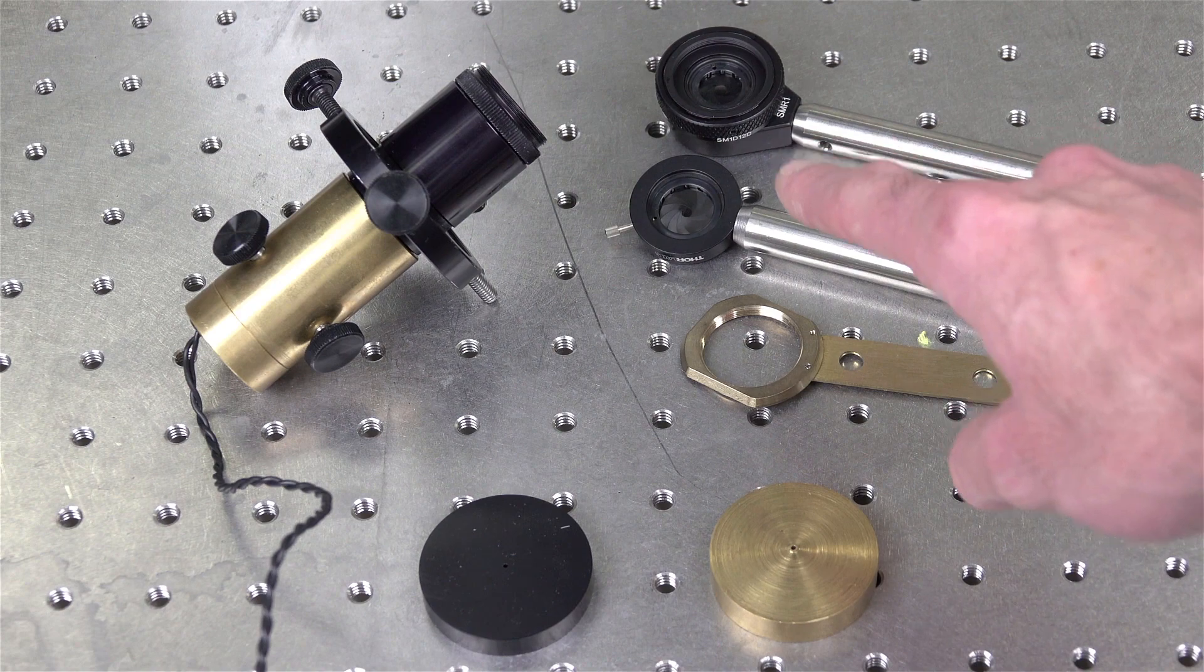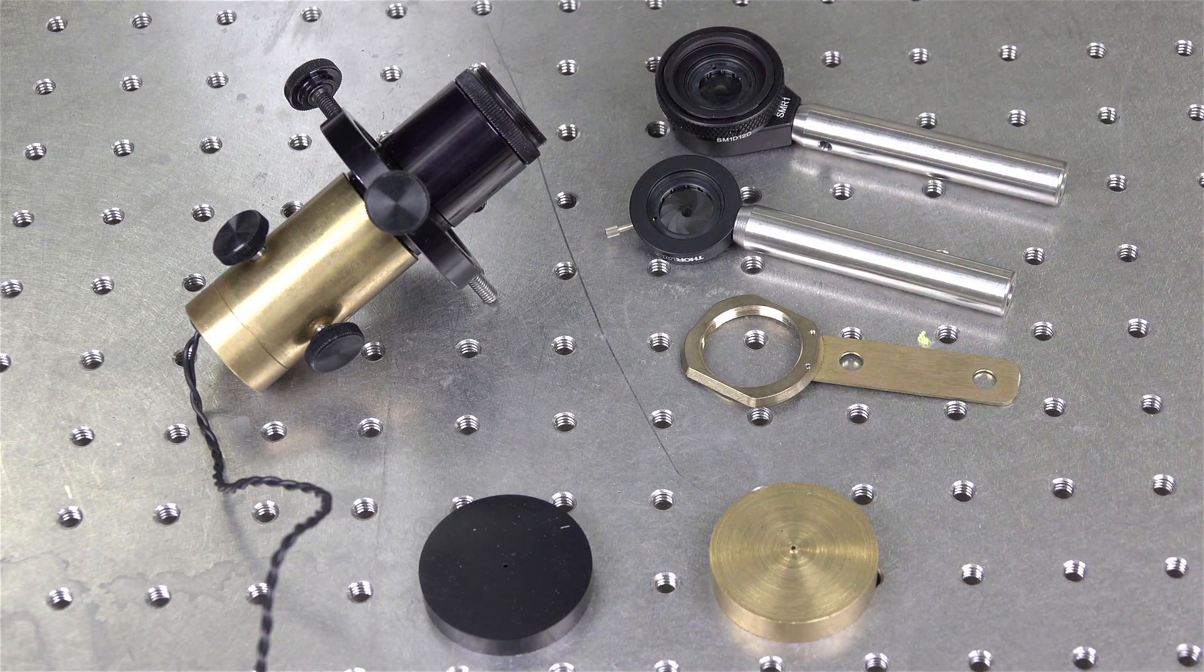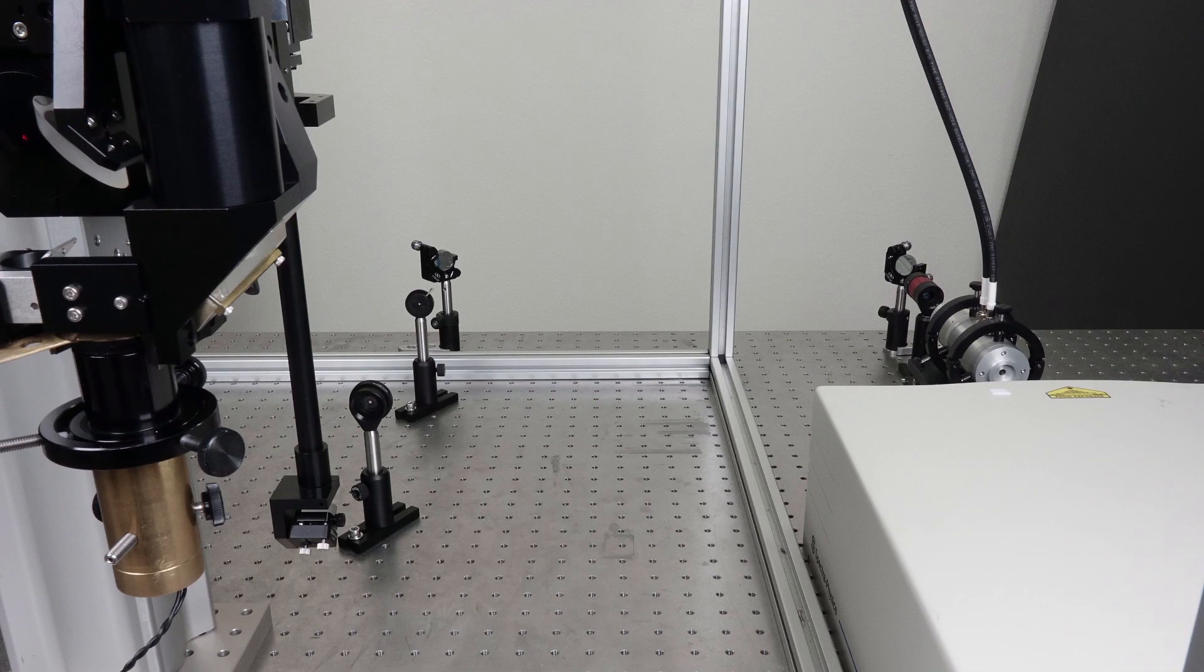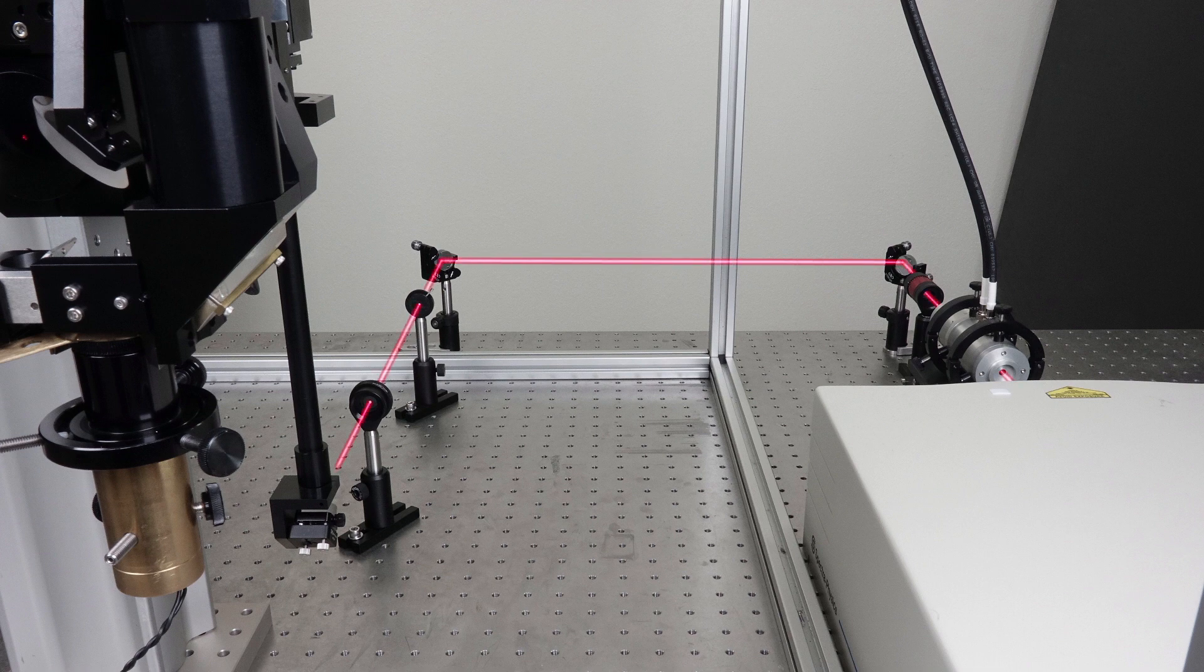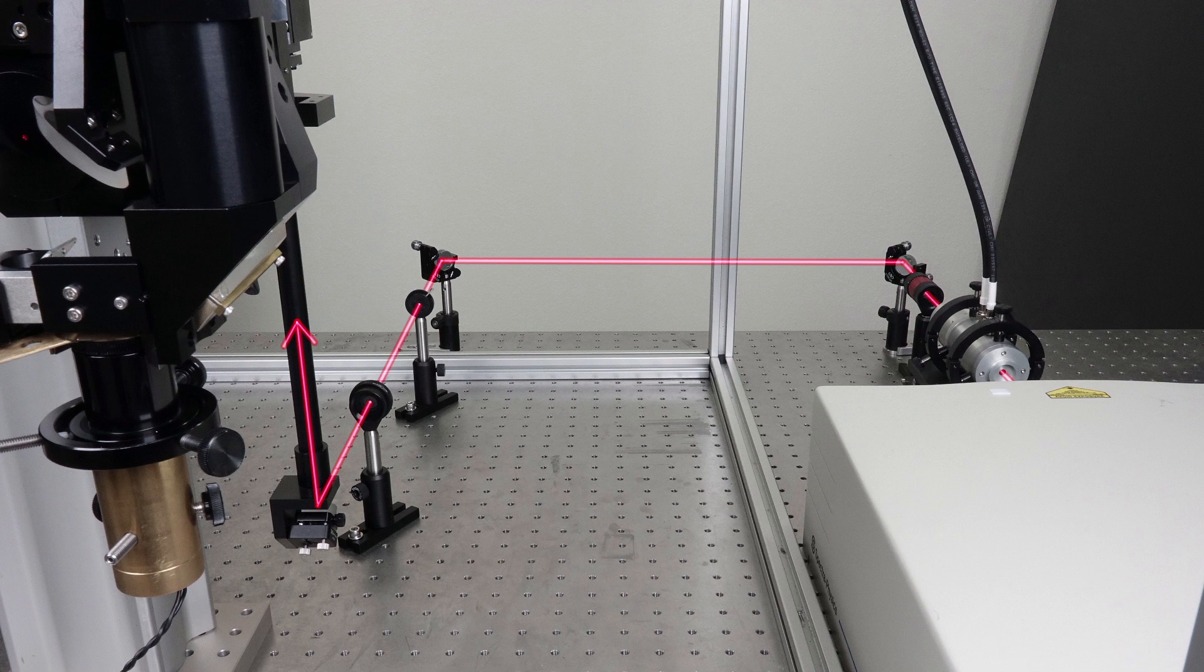We can then set up pinholes on the table using the centered alignment beam. Then, as a final step, we will run the imaging laser through the table pinholes and into the system. With a final tweak for centering the beam, the system will be ready and optimized for imaging.